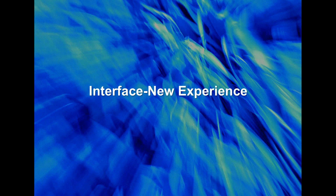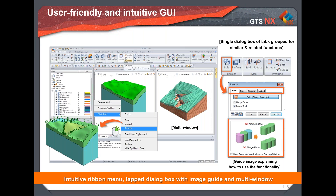Regarding the interface, GTS NX provides a multi-window feature. When running one analysis — which can take two to three hours on a real project — you can simultaneously open another window and work on two or three projects at once, saving significant time. The GUI is also very intuitive; if you don't know what a command does, you can use a pictorial depiction of its output to help you learn and adapt quickly.